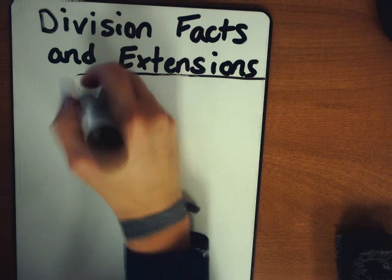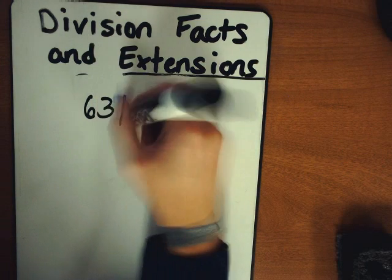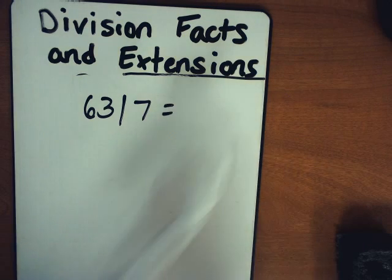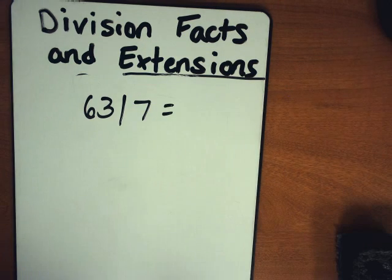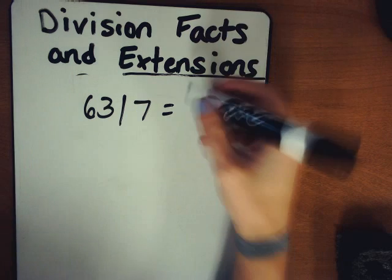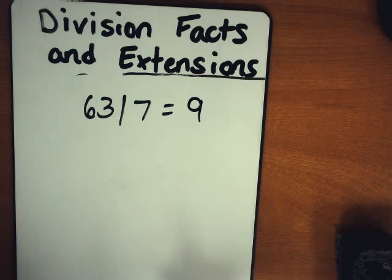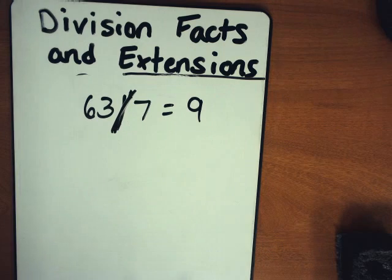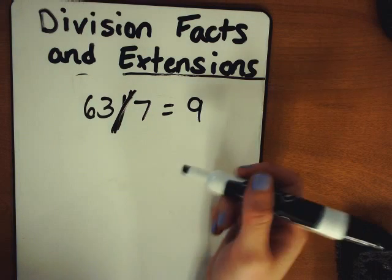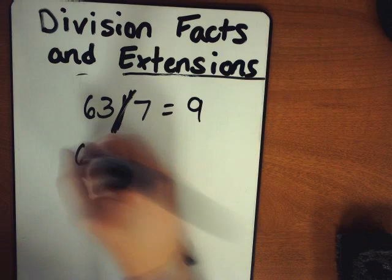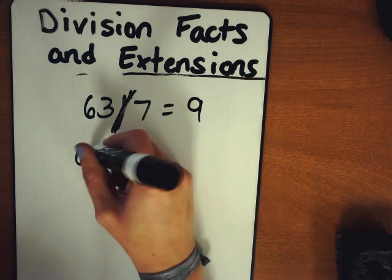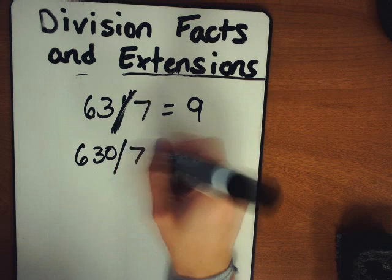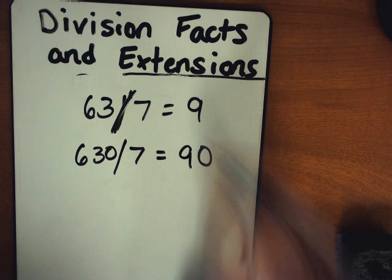So when we think about 63 divided by 7, go ahead and write that down in your notebook and put the quotient there. 63 divided by 7 is equal to 9, 9 being our quotient. So I can do an extension by adding a 0. So if I know 63 divided by 7 is 9, then 630 divided by 7 is 90.